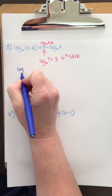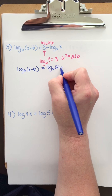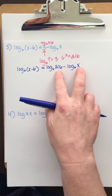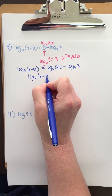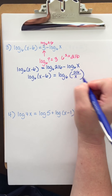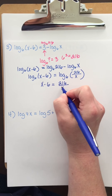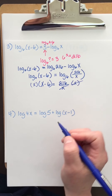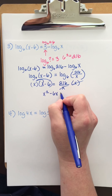So let's rewrite this. We have log base six of x minus six equals log base six of 216 divided by x — because subtracting a log means division. Now I can use the one-to-one property. This means x minus six must be equal to 216 over x. I'm going to multiply by x on both sides. That'll cancel. Distribute: x squared minus 6x equals 216.